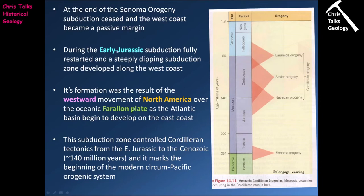During the early Jurassic, subduction fully restarted along the west coast, leading to the formation of a steeply dipping subduction zone. This was due to the westward movement of North America over the oceanic Farallon Plate — a direct reflection of the rifting along the eastern side of North America that eventually formed the Atlantic Basin. This subduction zone would control tectonism along the western side of North America from the early Jurassic all the way into the Cenozoic — a period of about 140 million years. The start of subduction marks the beginning of the modern circum-Pacific orogenic system.